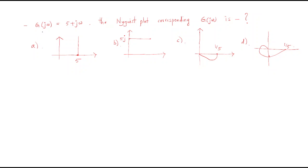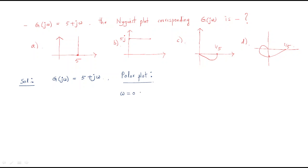For the next problem, the given system is G(jω) = 5 + jω, and we need to identify the correct Nyquist plot. The given system is an open-loop transfer function. To approach this, the primary step is to draw the polar plot first, and then proceed to the Nyquist plot.